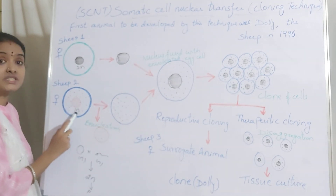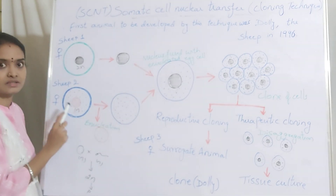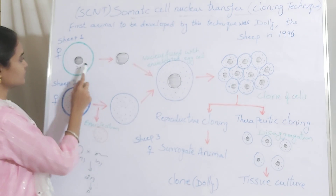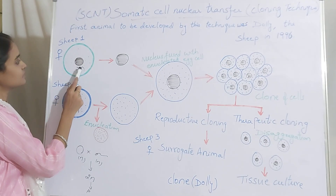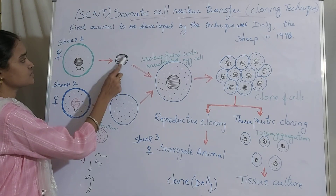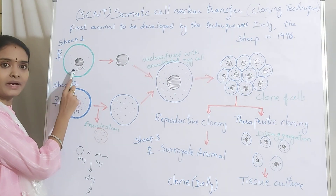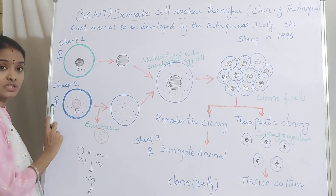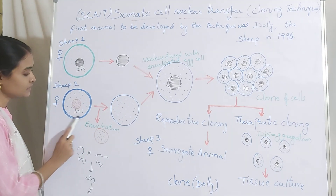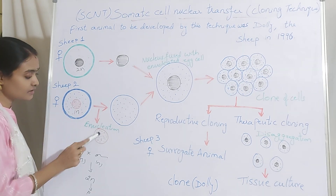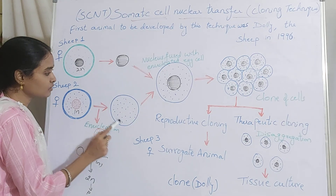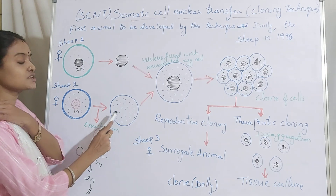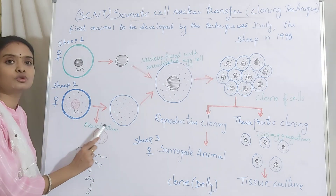From another sheep they have taken the egg which is not fertilized — the unfertilized egg is taken, with no fertilization. In the sheep 1 case, they have removed the nucleus from the somatic cells. And in sheep 2, from the egg cell they have again discarded the nucleus and taken only the enucleated egg cell. This process of removing the nucleus from the egg cell is referred to as the enucleation process.